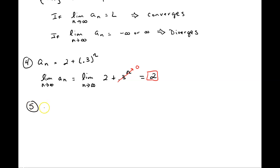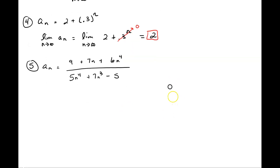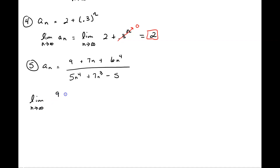Let's look at another example — number 5 — which is a little more challenging but not that bad. We have 9 plus 7n plus 6n to the 4th power, all divided by 5n to the 4th power plus 7n cubed minus 5. There are a couple of ways to approach this. I can look at something like this and spit out the answer right away because I see something relating to asymptotes of the function, but let's do the actual work.